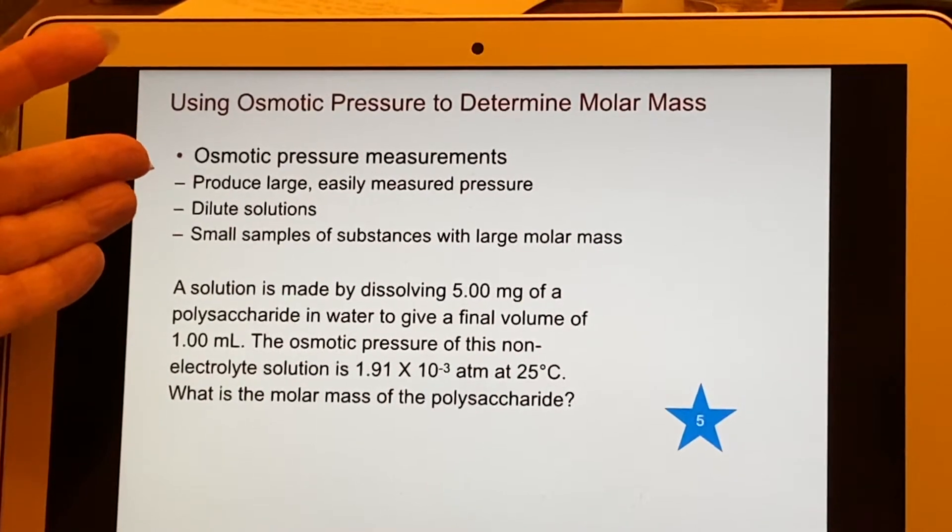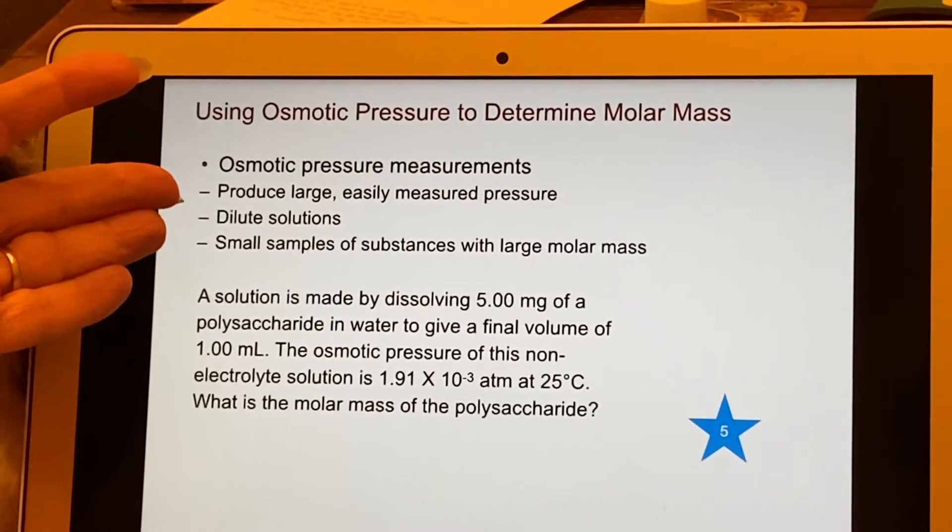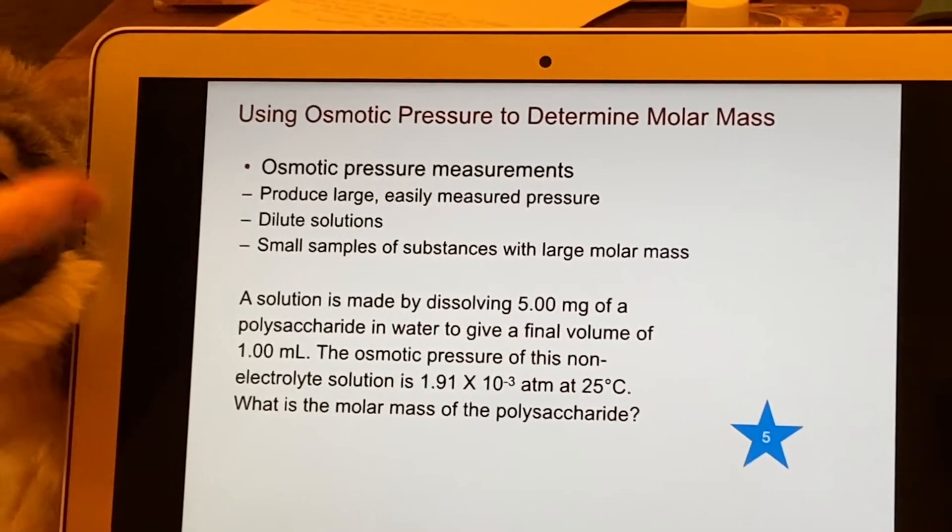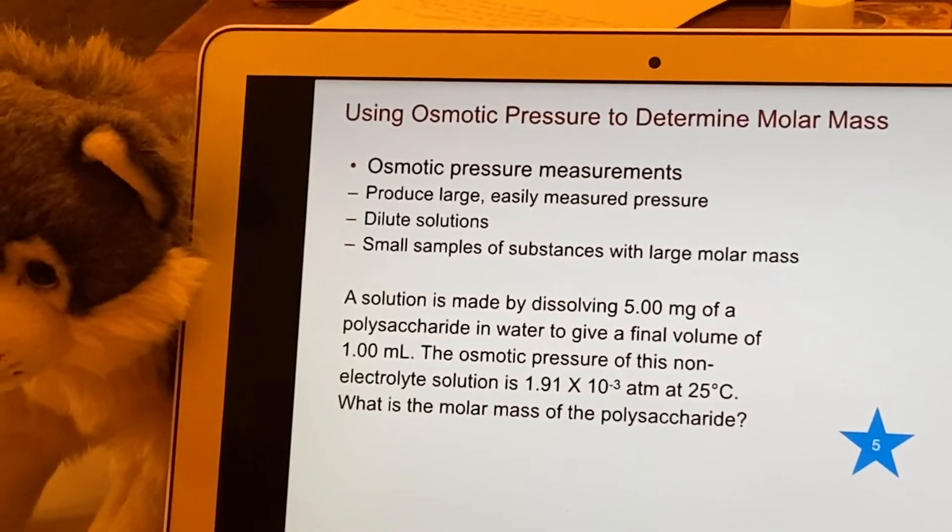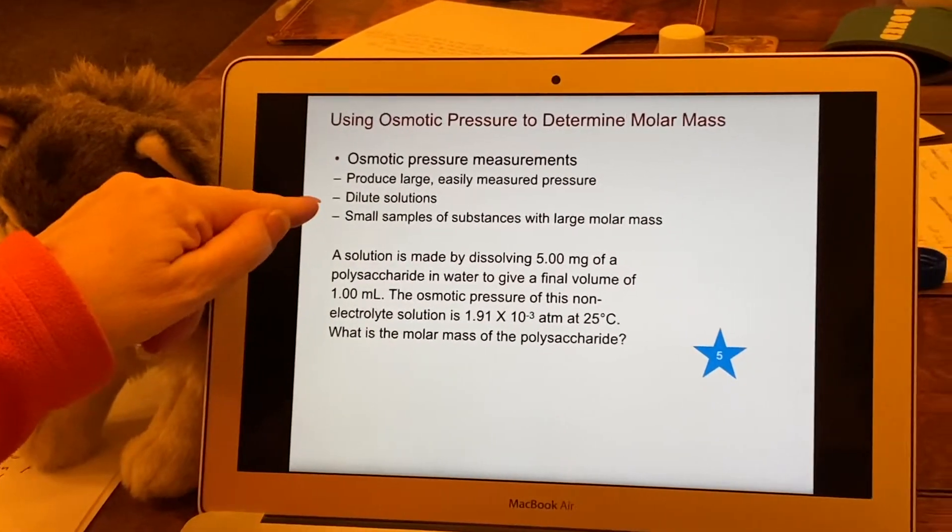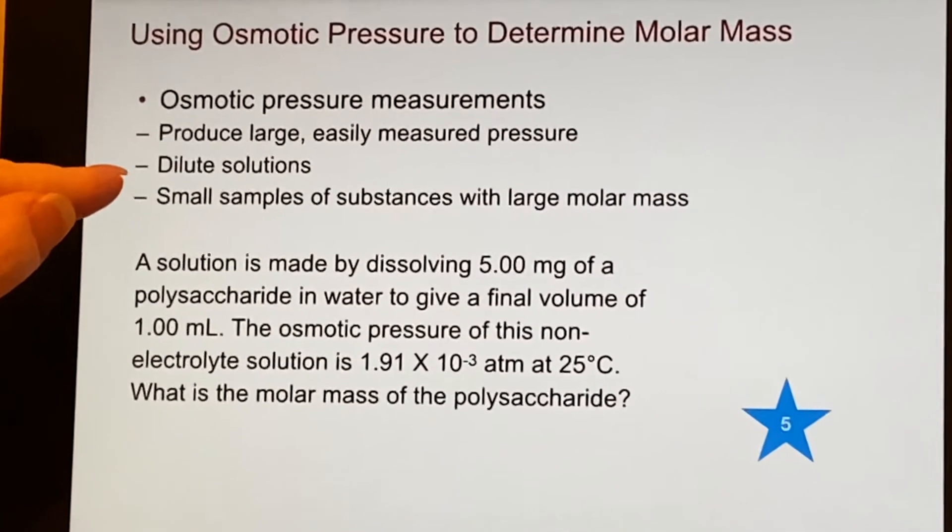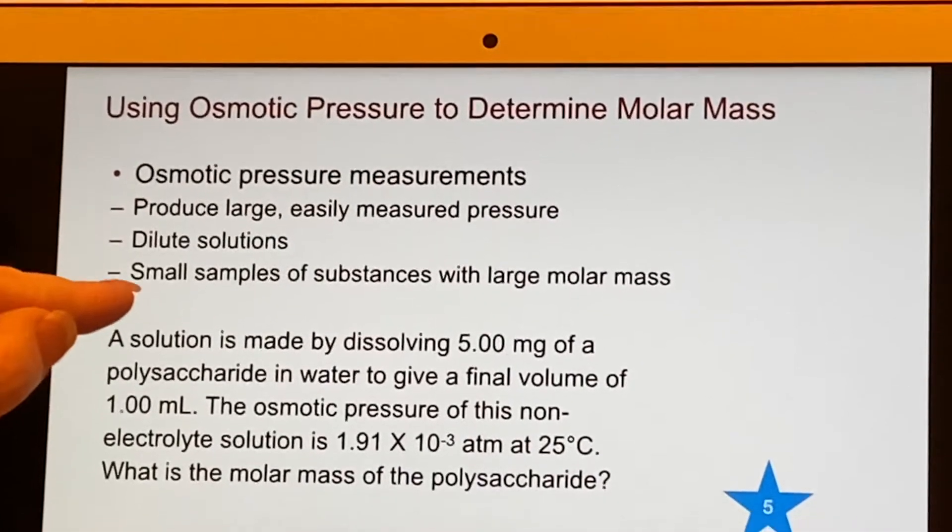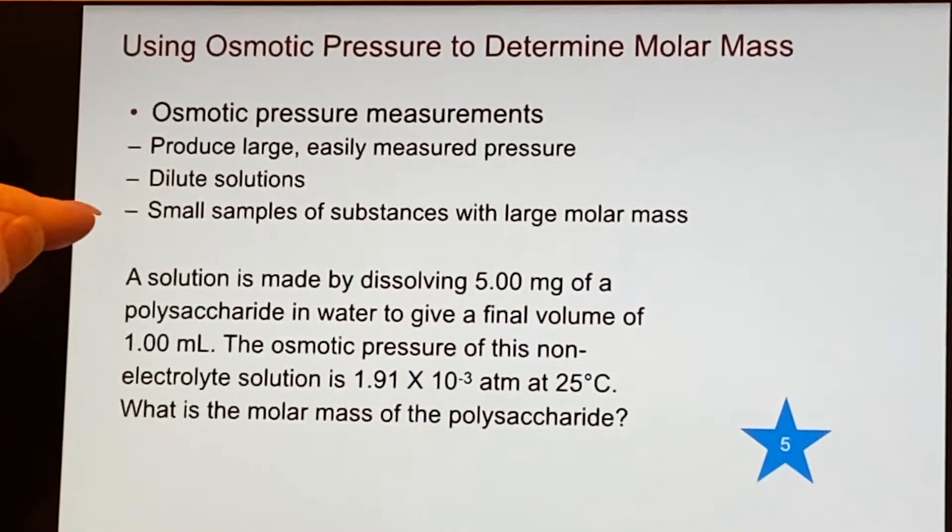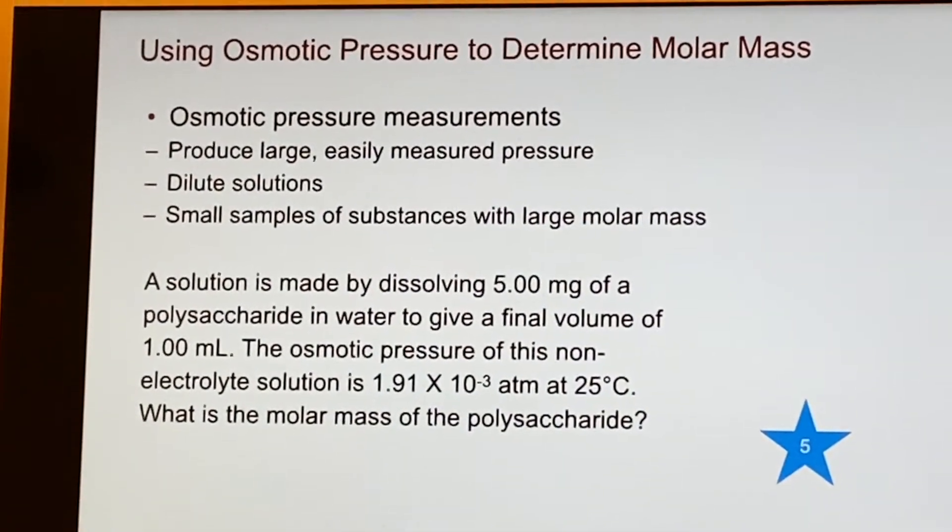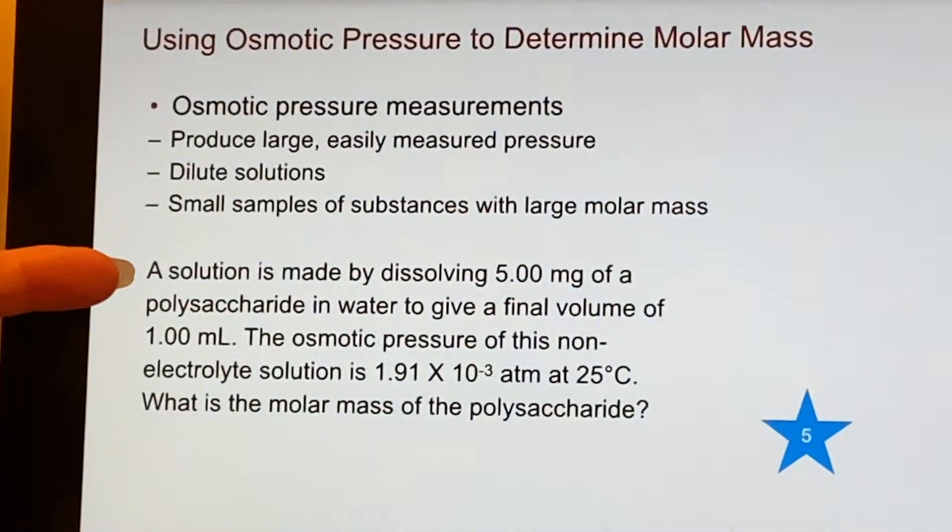Because the way osmotic pressure is, it's easily measured. You can measure the height of that column of water easily and then you can figure out what the osmotic pressure is from the height of that column of water. And it works on dilute samples. And if you have something that has a large molar mass, it will not take very much to make quite a bit of osmotic pressure.